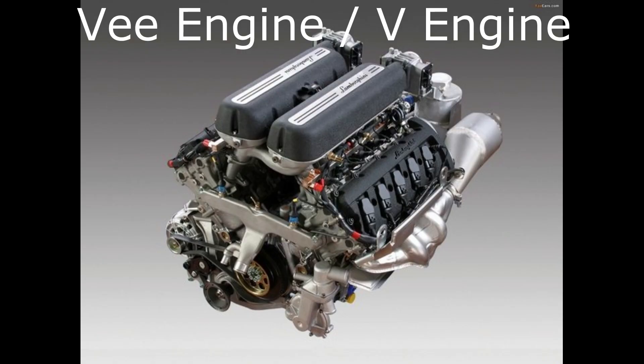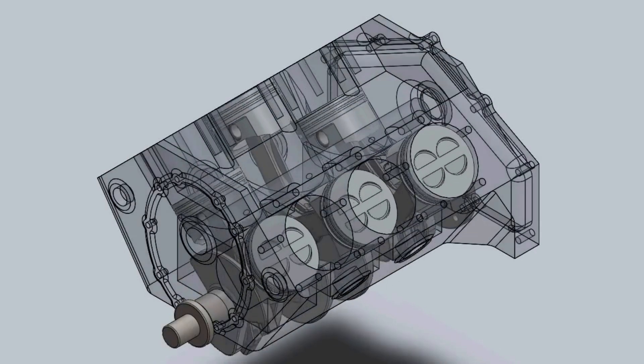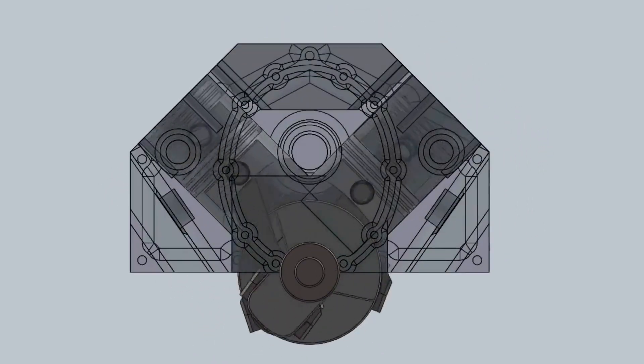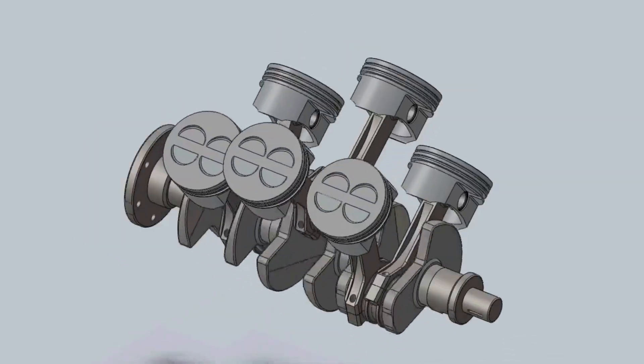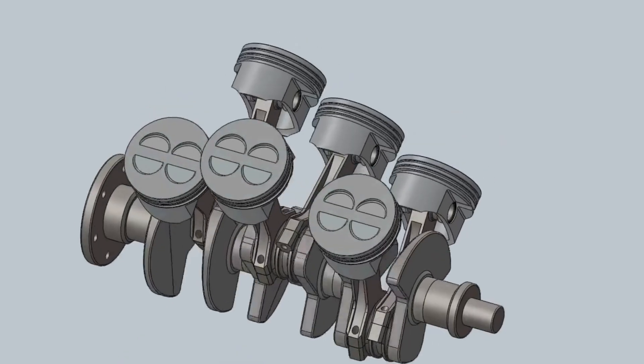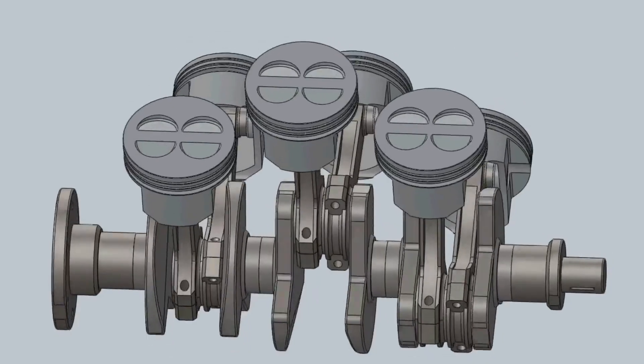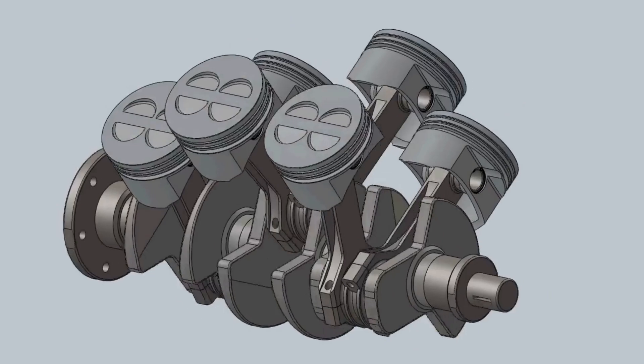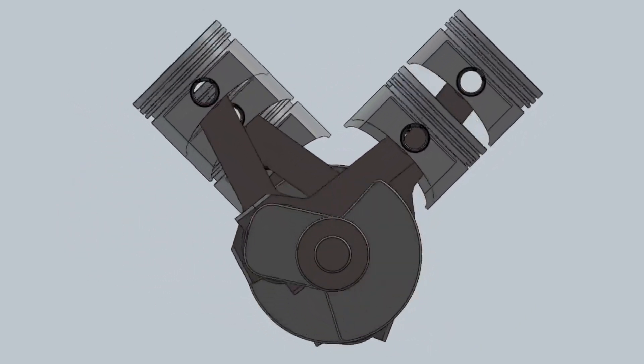Number three in the list is the V engine. The V type of engine got its name from viewing the engine from the front - the cylinders are arranged in a V shape. Each bank of cylinders faces outwards and drives a common crankshaft at the base of the V. This style is generally reserved for premium and performance cars because, due to its layout, you can squeeze a higher displacement engine with more cylinders into a smaller space. There are a wide variety of V engine configurations from six-cylinder to 12-cylinder engines.